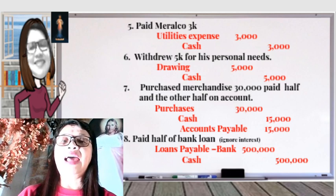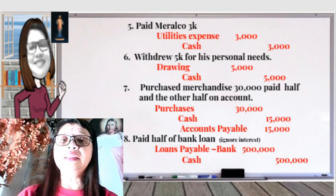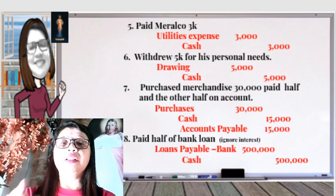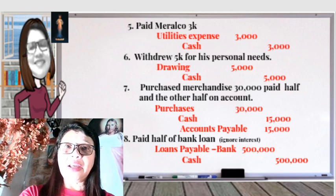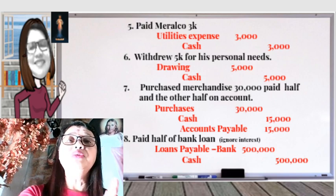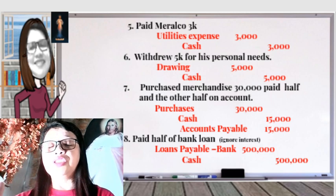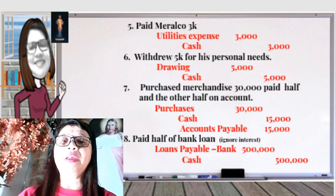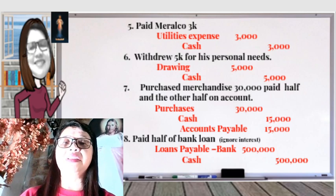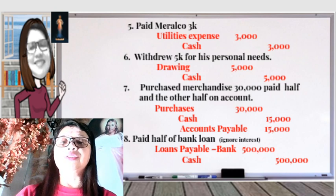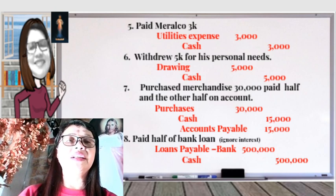Number eight: paid half of the bank loan. The bank loan was $1 million, so half is $500,000. The normal balance of loans payable is credit, but because we want to reduce the loan, we do the opposite and debit loans payable $500,000. Because you need to pay the bank, there is also a reduction in your cash account of $500,000, so you credit cash $500,000.